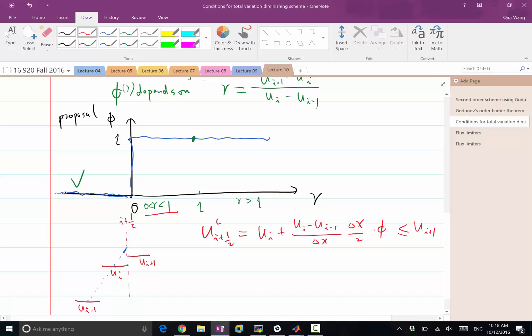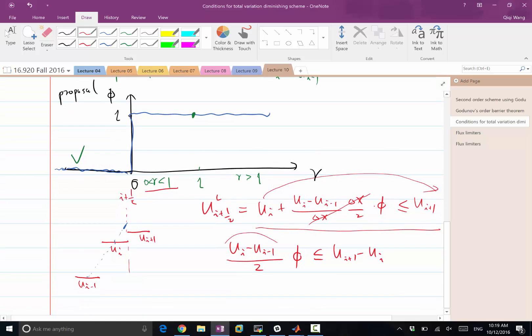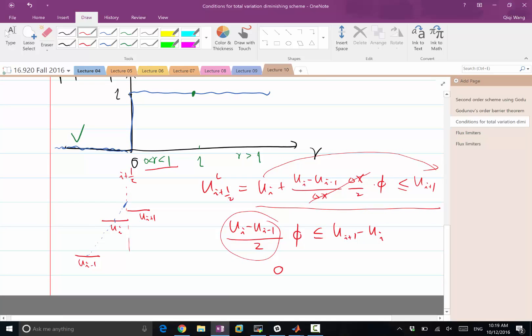Now, if I look at this inequality and move that ui to the right-hand side, what we get is ui minus ui minus 1. This two delta x is cancelled. We get over 2 times φ is less or equal to ui plus 1 minus ui, right? And we divide this on both sides to get the inequality for φ. We get φ is less or equal to 2 times ui plus 1 minus ui divided by ui minus ui minus 1, which is exactly 2r.